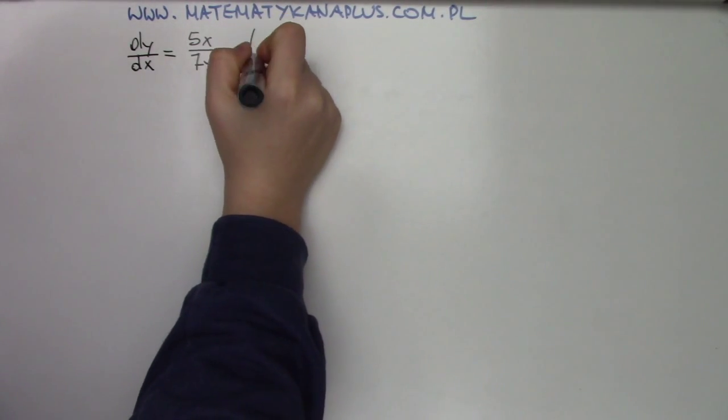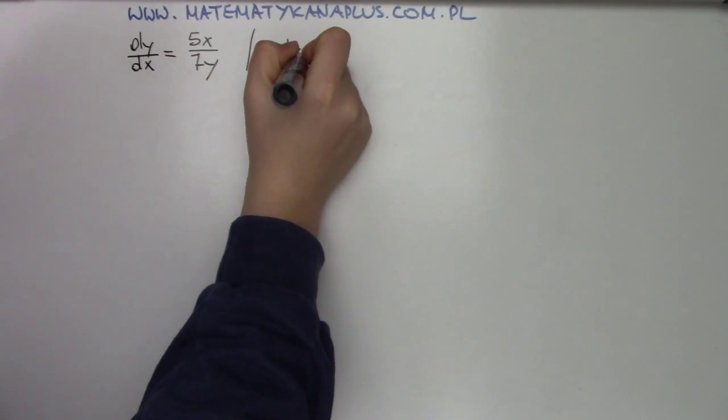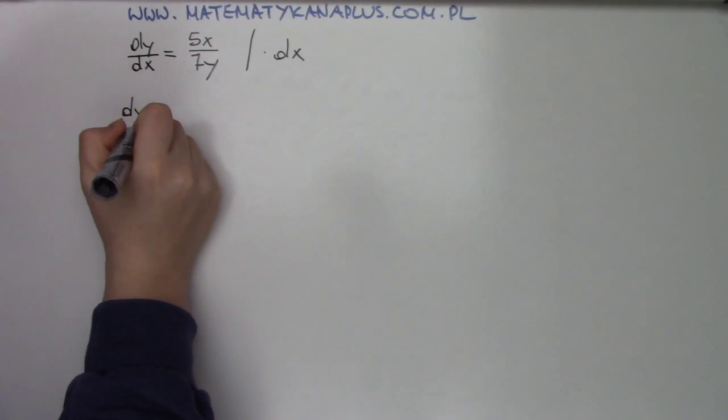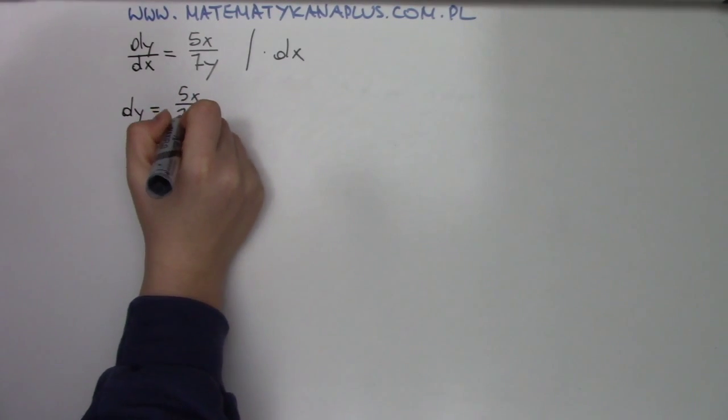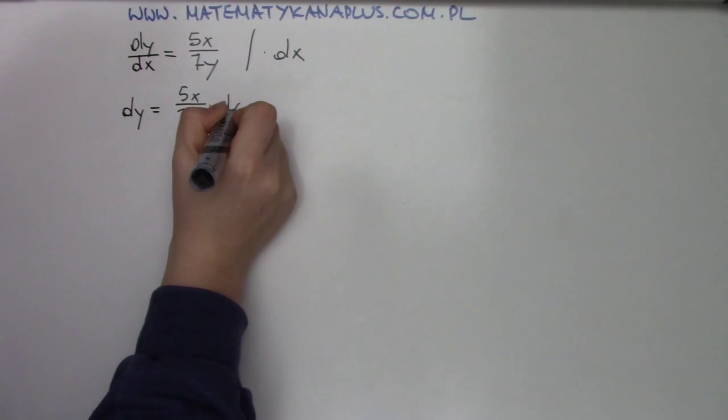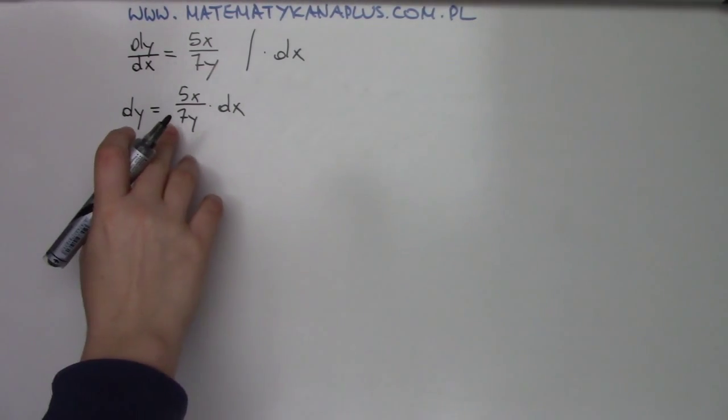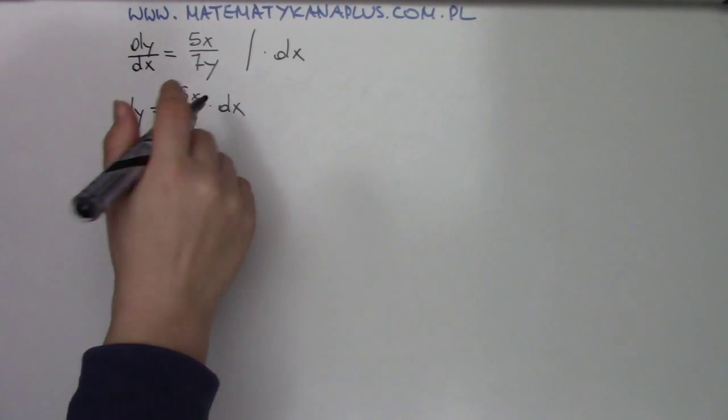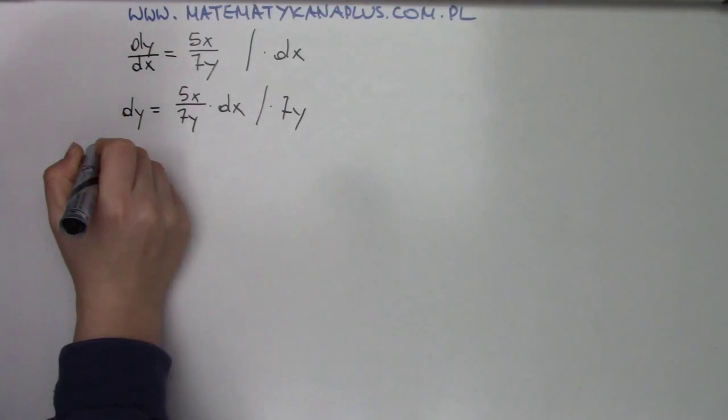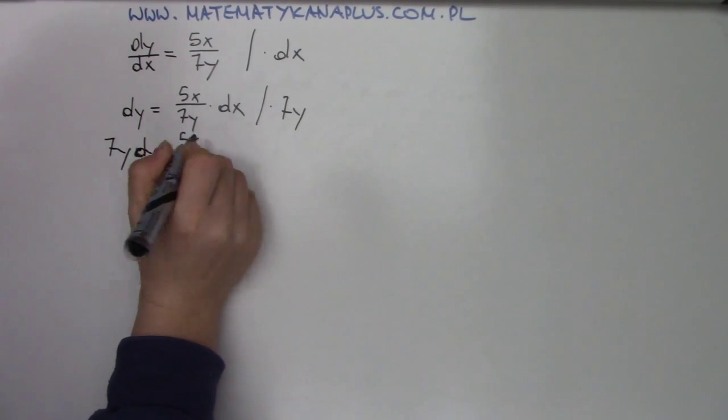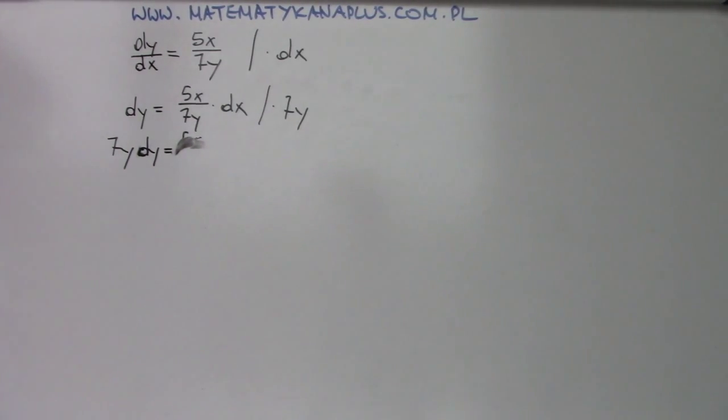So now I will put this on the right side, so it will be something like this. The only thing on the right that is not good for me is the 7y. So I will multiply by 7y and make it here. That will be something like this.